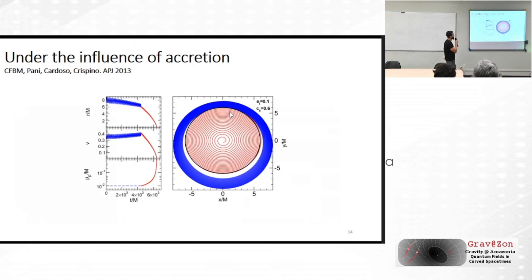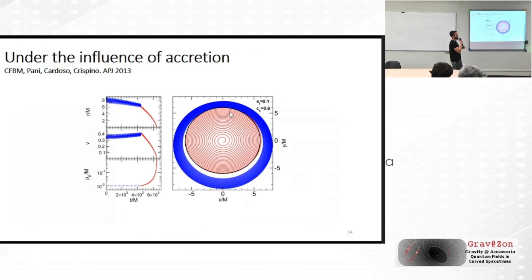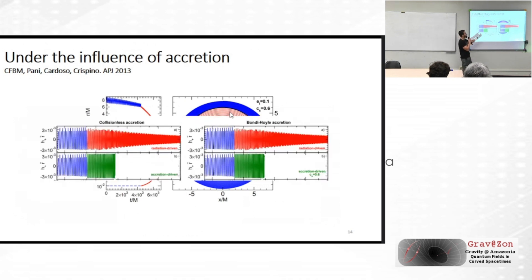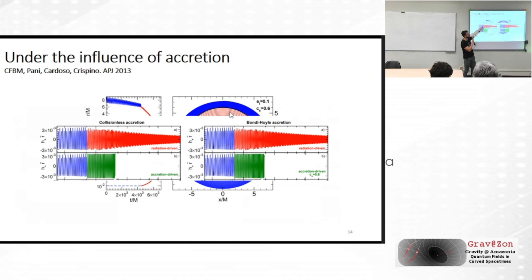In work done almost ten years ago with Crispino, Paulo Pani, and Vitor Cardoso, we studied accretion's influence on an extreme mass ratio inspiral — a particle orbiting a dark matter star, then entering it. Inside the star, because angular momentum is conserved under accretion, the gravitational wave amplitude doesn't change until the particle reaches the center and the motion stops. Compared to a radiation-only scenario, including accretion drastically changes the observed waveform.